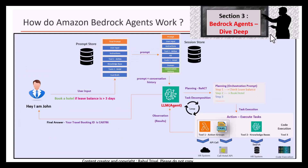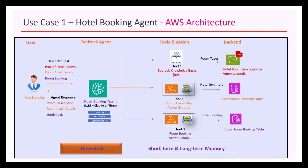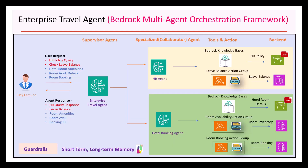Next, we'll do a deep dive on Amazon Bedrock agents and how they work. Then we are going to build a hotel booking agent. Here is the architecture for the use case — we're going to build a Bedrock agent with multiple tools and backends. Next, we're going to build an enterprise travel agent, which will be a multi-agentic solution, including the hotel booking agent and the HR agent, using the Bedrock multi-agent orchestration framework.